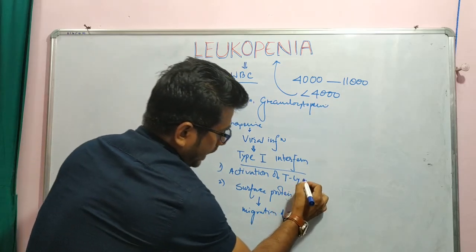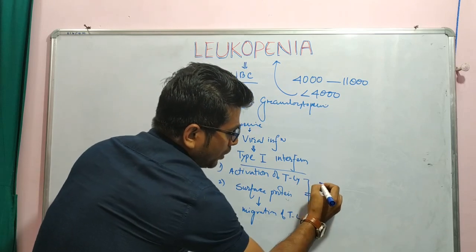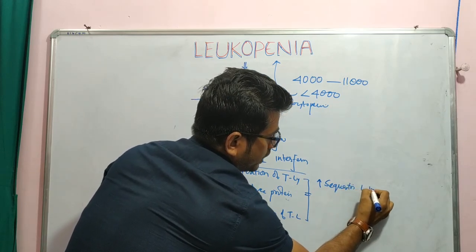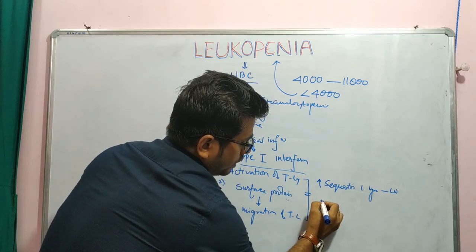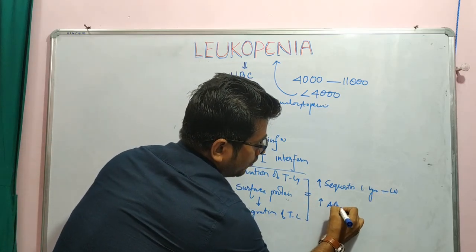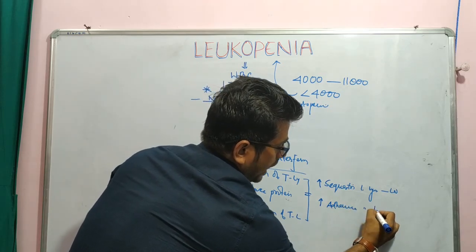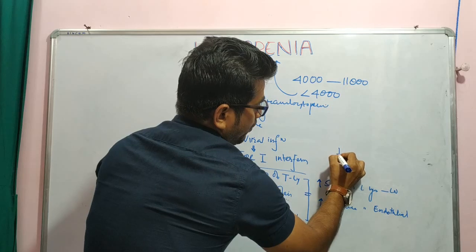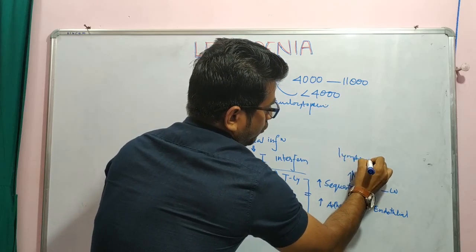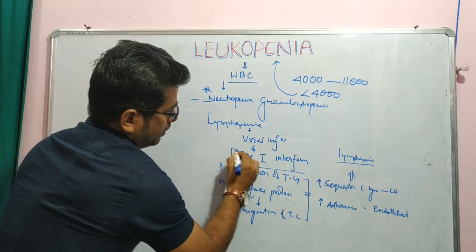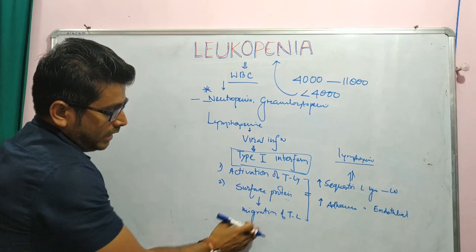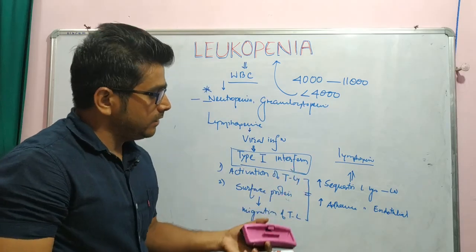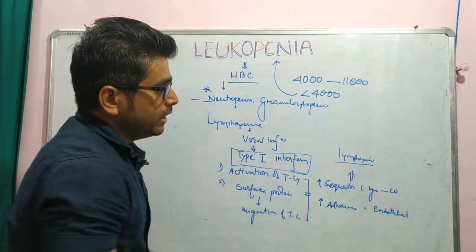Both these activities will cause: number one, increased sequestration of T lymphocytes in the lymph node; and number two, increased adherence of the T lymphocyte with the endothelial cell. Both activities cause lymphopenia. So in the case of viral infection, type one interferon activates the T lymphocyte and alters its migration, leading to sequestration in the lymph node and increased adherence with the endothelial cell lining, resulting in lymphopenia.